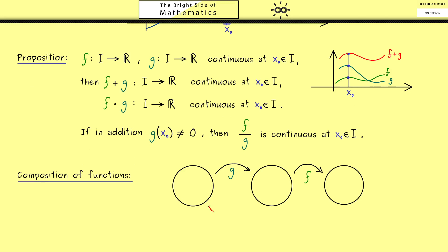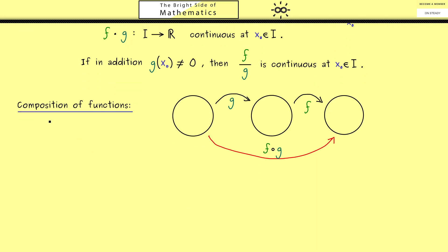And the new map that comes out here we call f after g, and usually we denote that with a circle in between. An important thing here is you should read that from right to left. So first apply g and then f. Now here what we get is that continuity is also conserved under composition.